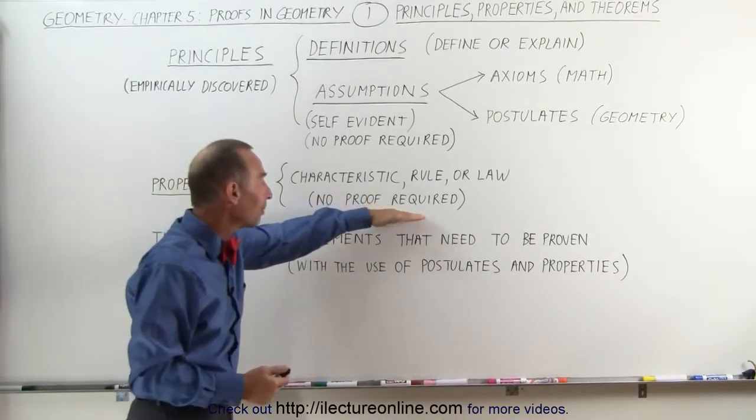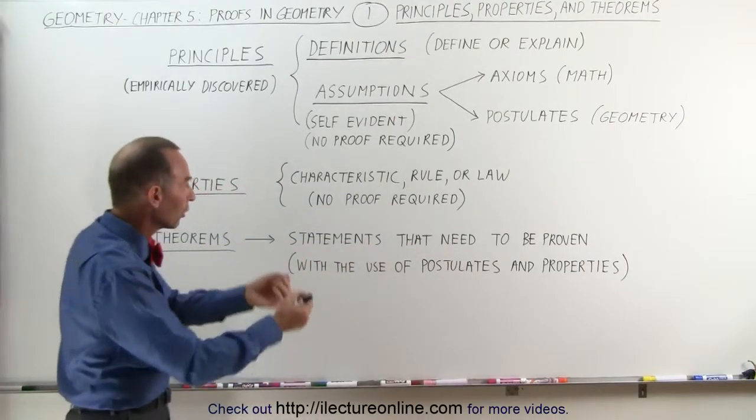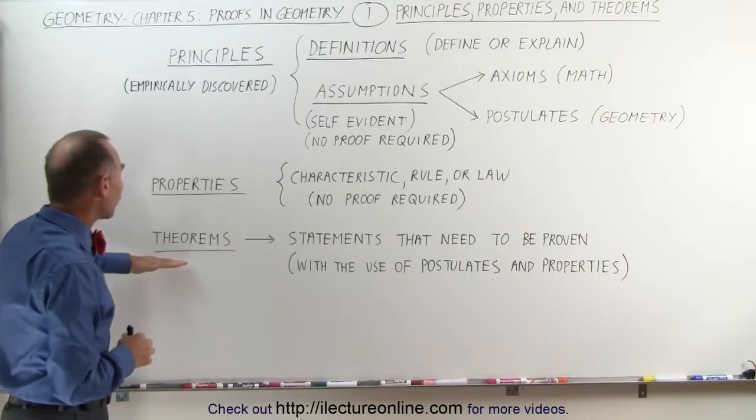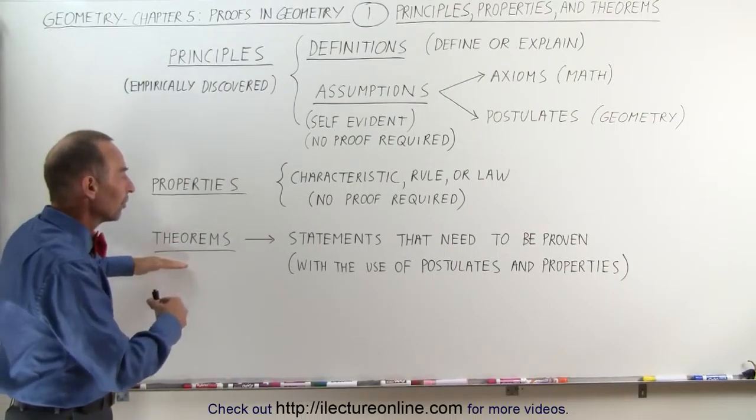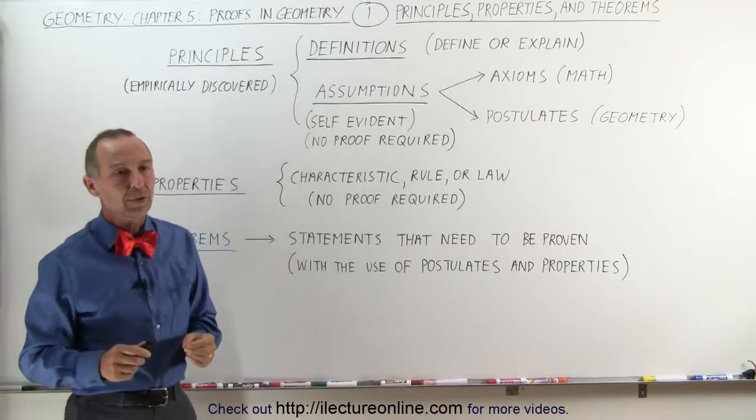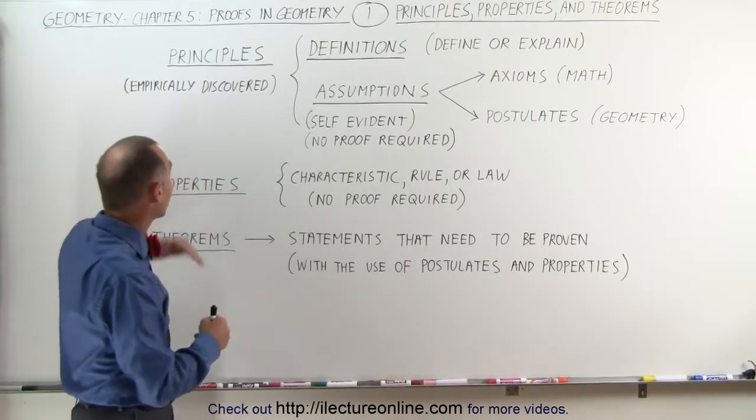Those things can be used also to do proofs because when we compare something to a square, then you know, oh, if it's a square, all sides are equal. Again, no proof required. We simply accept those because those are the rules. Those are the characteristics of the things that we're talking about.